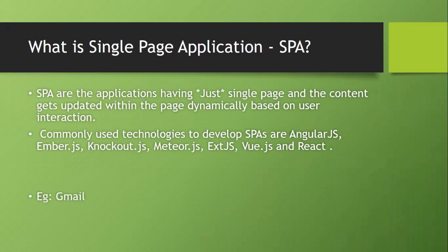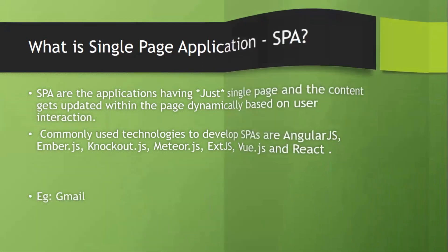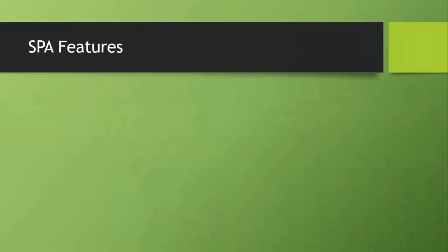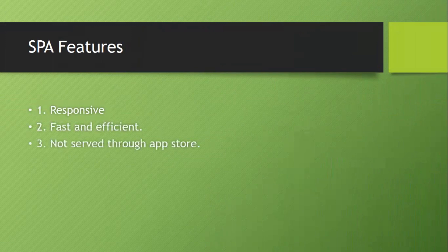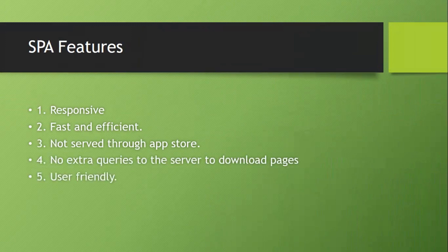For example, Gmail is a single page application. SPA features: they are responsive, fast and efficient, not served through the App Store, require no extra queries to the server to download pages, and are user friendly.